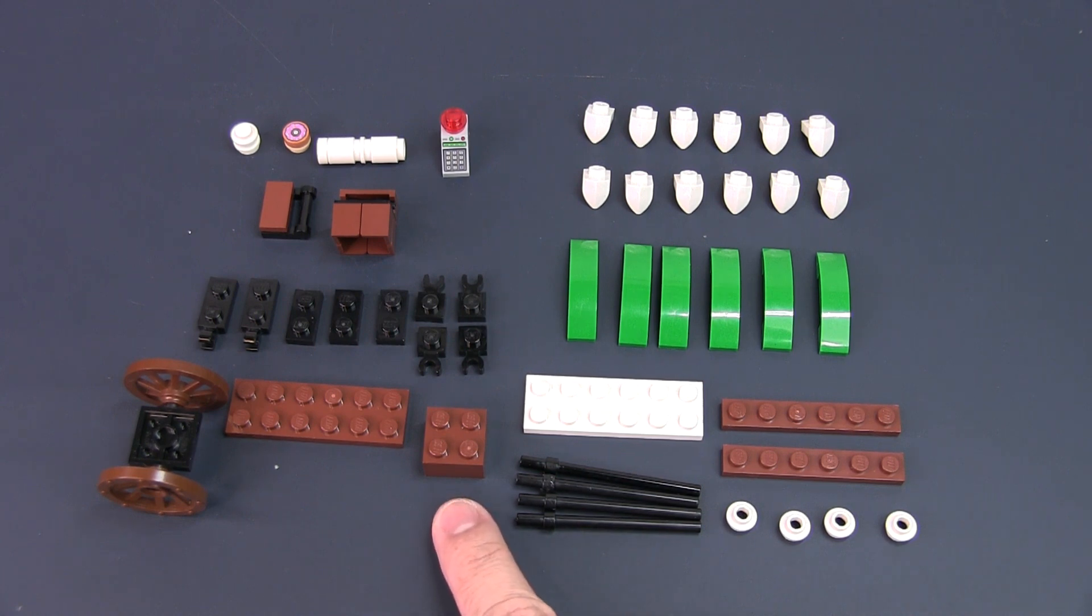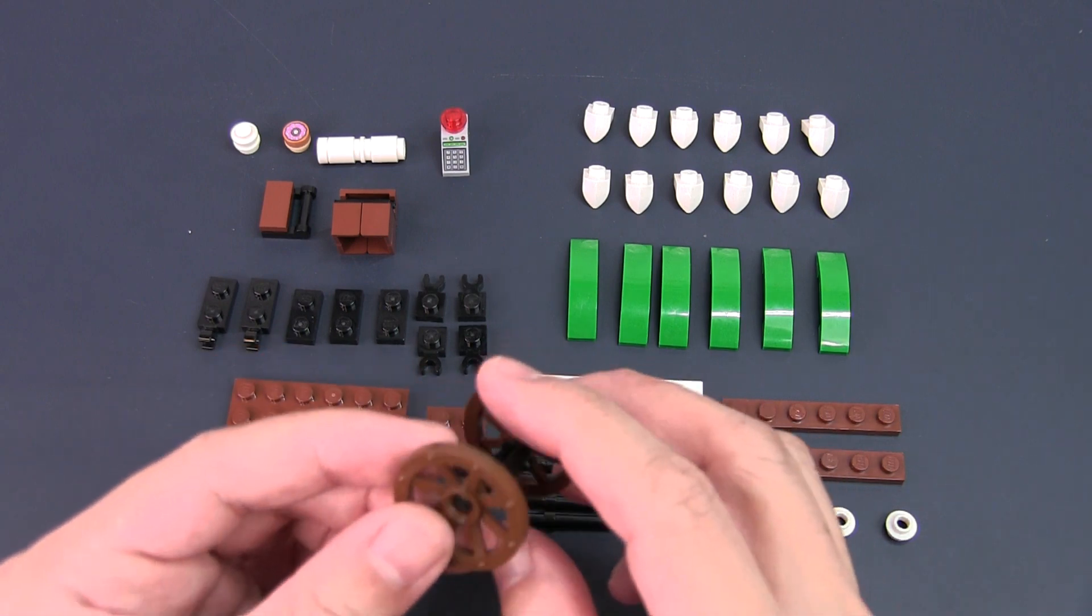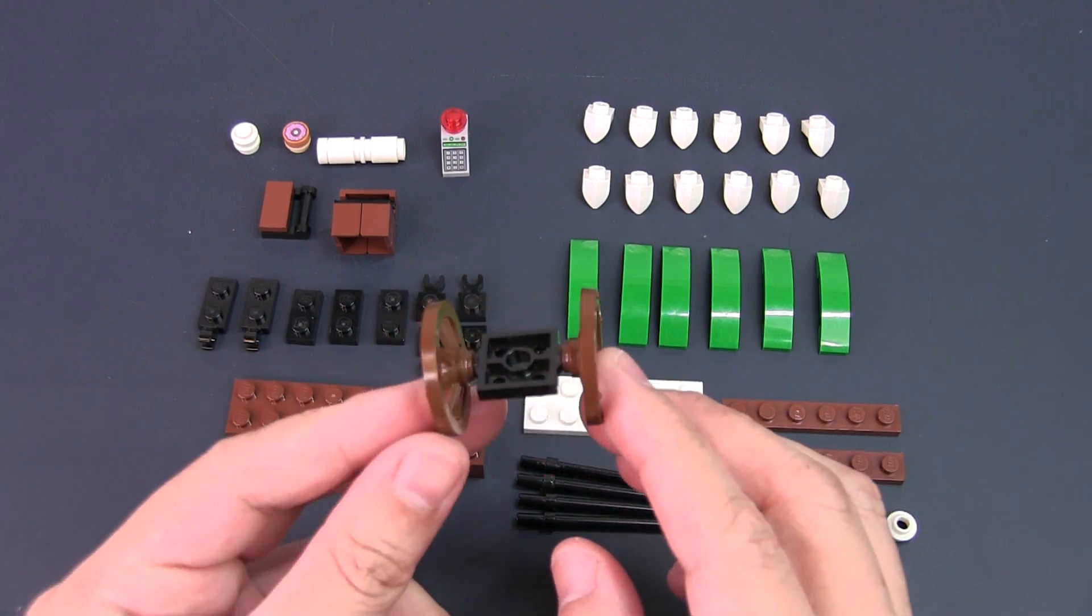For the base of the cart you need a 2x2 brick, a 2x6 plate, a set of medium wagon wheels with a 2x2 plate with 2 axle pieces.